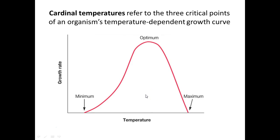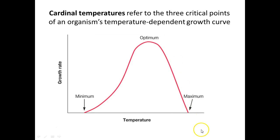All organisms have what we call cardinal growth temperatures — a range of temperatures that are best for the organism. Everyone has their minimum: go any lower and they could potentially die or stop growing. The optimum is the best temperature — it will grow the fastest under ideal conditions. Every organism also has a maximum, and you'll notice the growth rate quite dramatically drops off when we increase in temperature.